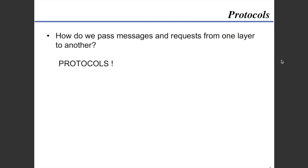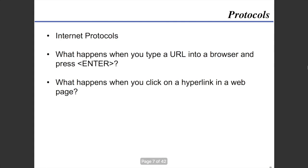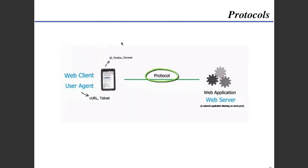So how do we pass a message and request from one layer to another? We do it through protocols — internet protocols in particular. What happens whenever you type a URL into a browser and press enter, or click on a hyperlink? Basically we have the web client. It's based on a client-server model, so the web client will make a request to the server for a resource, and the resource will be served back to the client.